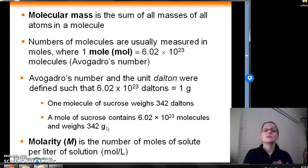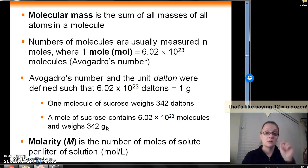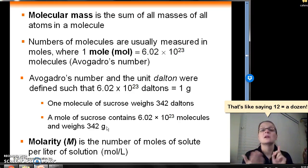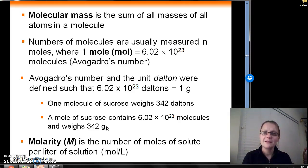We want to measure these molecules in greater quantities. So a unit was defined by Avogadro called Avogadro's number, and he defined a mole to be equal to 6.02 times 10 to the 23rd molecules. One mole has 6.02 times 10 to the 23rd molecules.